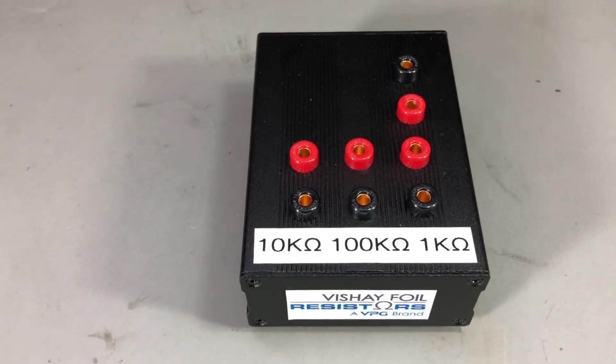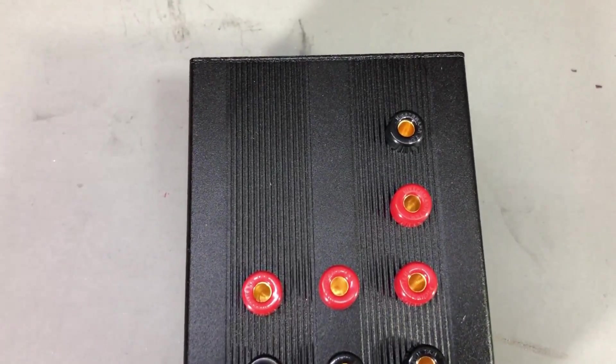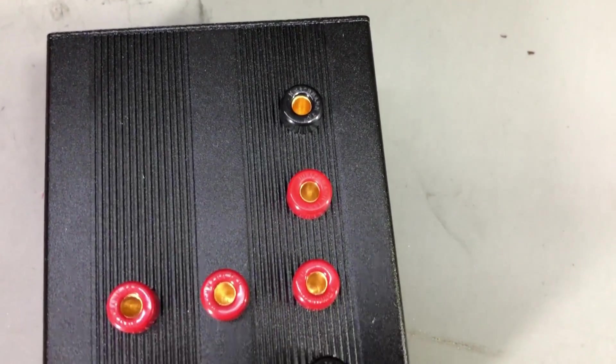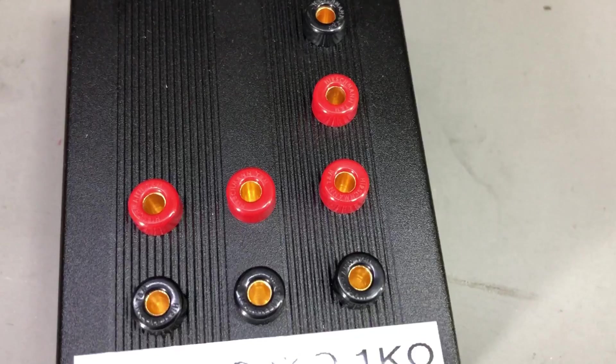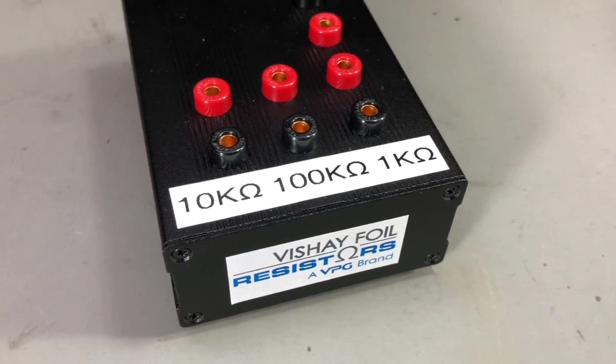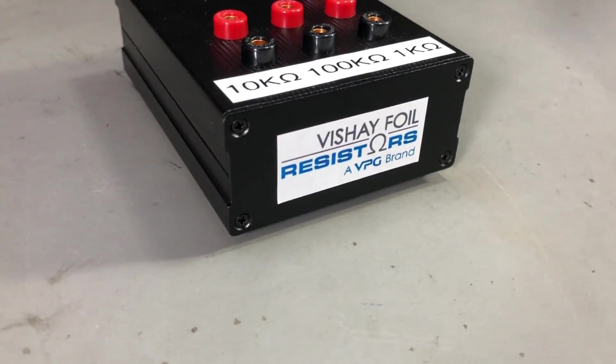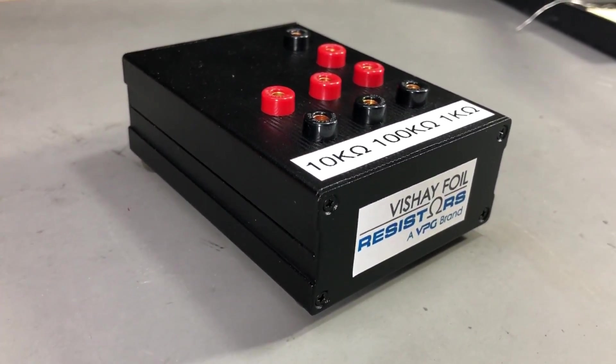From now on, every multimeter I review will be tested on this resistance reference box. However, I would like to get this measured again on a calibrated multimeter and get a new set of reference measurements. Those that I got from Vishay measured on the resistors at the factory might have changed slightly after the final assembly. So that's the reason I would like to have this box recalibrated.